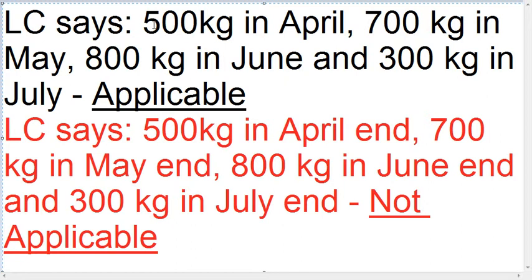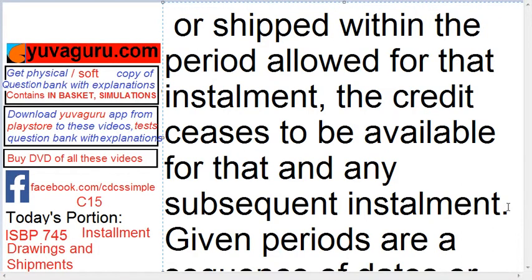Let's take an example — this is the same as Article 32. The LC says 500 kg in April, 700 kg in May, 800 kg in June, and 300 kg in July. If any one of these shipments is not done — for example, if 700 kg is not shipped in May — then the LC will cease to exist for May and also for subsequent installments: June and July.